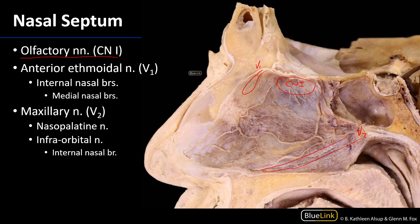V2 also has an internal nasal branch of the infraorbital nerve, which we can see coming out here. Recall, the infraorbital nerve of V2 is the terminal branch of V2 that exits through the infraorbital foramen onto the midface, and a branch of that can enter into the nasal cavity. So we have V1 and cranial nerve 1 at the top, and V2 on the bottom — both the anterior and posterior aspects innervated by V2.